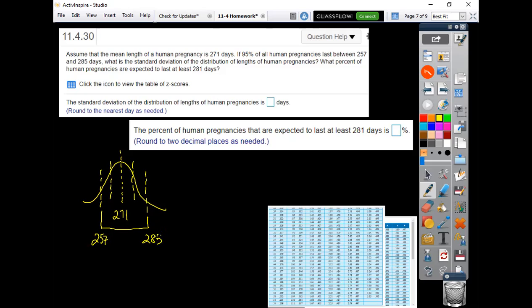And so how far out is that on either side, from 257 to 271 or 271 up to 285? My brain can do this side easier - that's 14. If I add 14 to 271, that's 285. If I subtract 14 here, that's 257. But remember, that's two standard deviations, so each one is just 7.